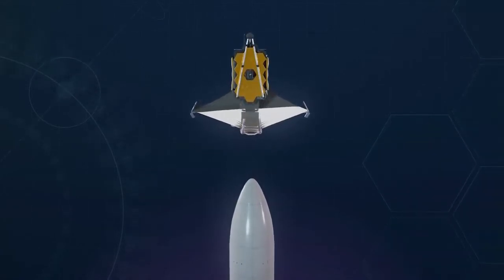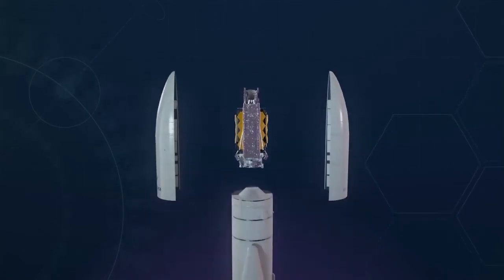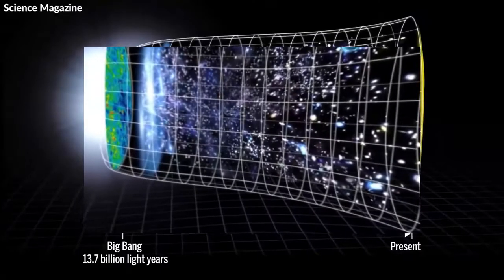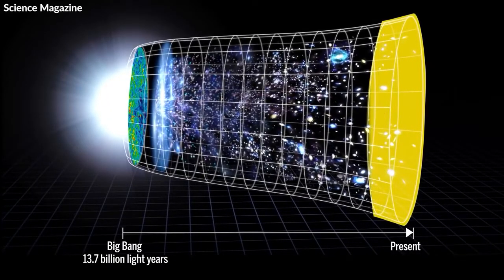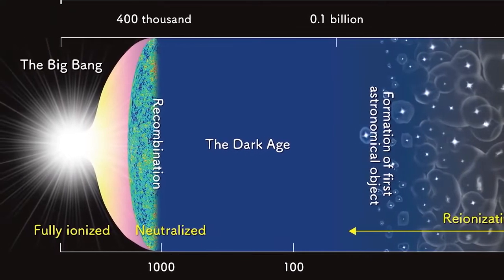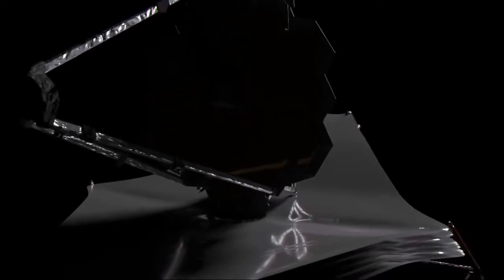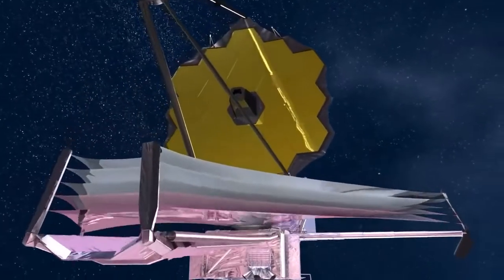The JWST is primarily designed for near-infrared astronomy, but can also see orange and red visible light as well as mid-infrared depending on the instrument. It can detect objects up to 100 times fainter than Hubble and objects much earlier in the history of the universe. This design emphasizes near to medium infrared for three main reasons.